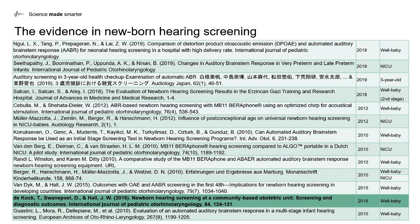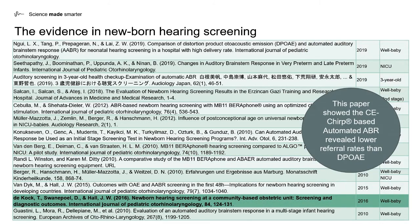The third study I want to highlight looked at and compared automated ABR testing using CE CHIRPs as opposed to DPOAE. This study was performed in the community. What this study showed was that by using CE CHIRP-based automated ABR, lower referral rates were achieved than using the alternative method, which in this study was distortion product otoacoustic emissions.